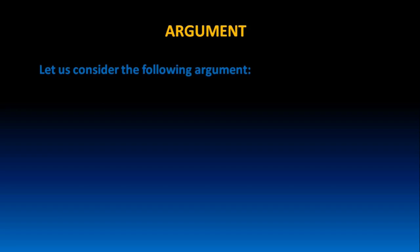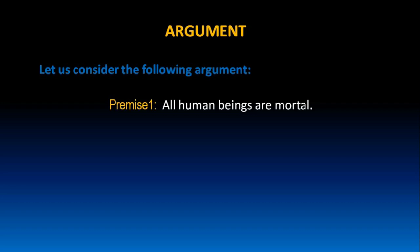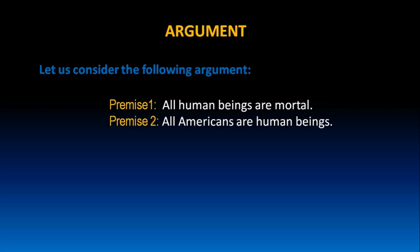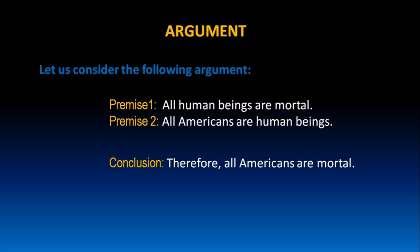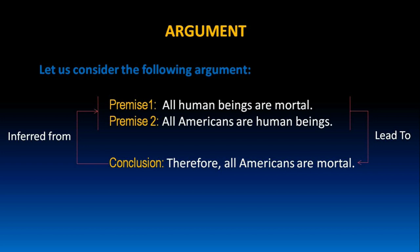Let us consider the following argument. All human beings are mortal. All Americans are human beings. Therefore, all Americans are mortal. In this example, premise one and premise two lead to the conclusion that all Americans are mortal, and the conclusion can be inferred from the given two premises. Which means the conclusion is dependent on premise one and premise two.